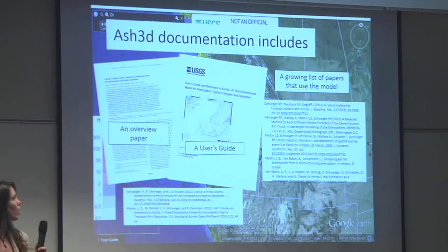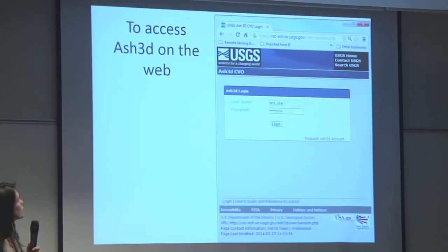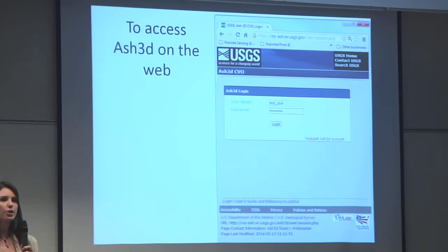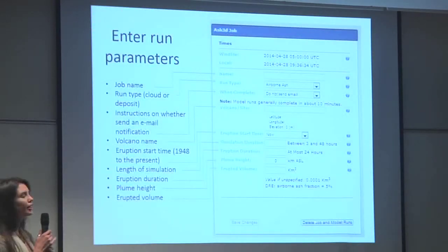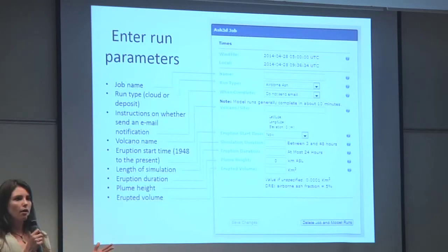There are some forthcoming papers that actually use it in a research context. To access the code, you just sign up — go to the web page, enter your information, and request a username. You create a new job. This is a stripped-down version of the code where you can enter very basic input parameters and look at where a volcanic ash cloud would go anytime from 1948 to present.